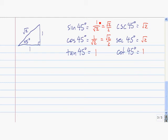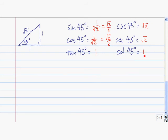To rationalize the denominator, we multiply the top and the bottom by square root of 2. So we have square root of 2 times square root of 2 in the denominator, which is 2, and 1 times square root of 2 in the numerator, which is square root of 2. Sine of 45 degrees and cosine of 45 degrees are the same because we have an isosceles right triangle, so cosine of 45 degrees is also root 2 over 2. For tangent, opposite over adjacent, that's 1. The remaining three are just the reciprocals.